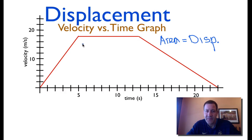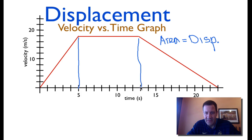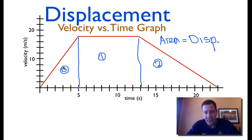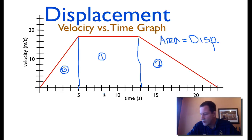You can see that we have basically two triangles and a rectangle. I'm going to draw lines to make it easier to visualize. We have three sections: section one, section two, and section three — two triangles and a rectangle. It's pretty easy to calculate the area of those shapes, and since the area under the curve equals displacement, let's go through and do that.